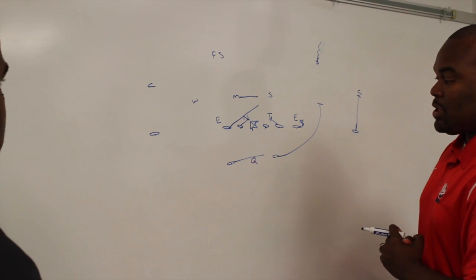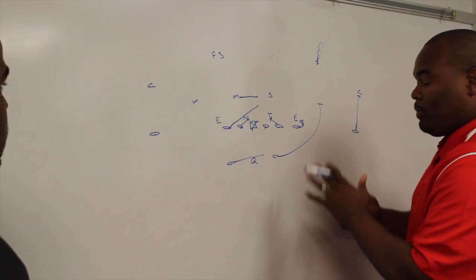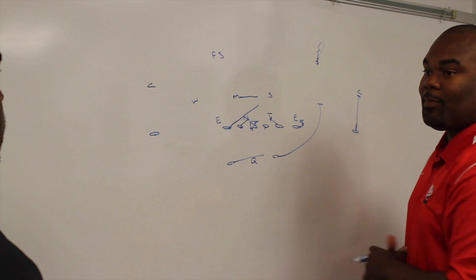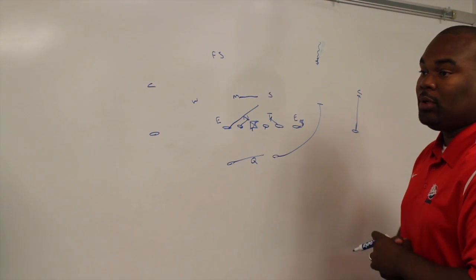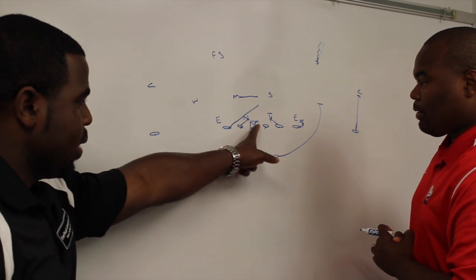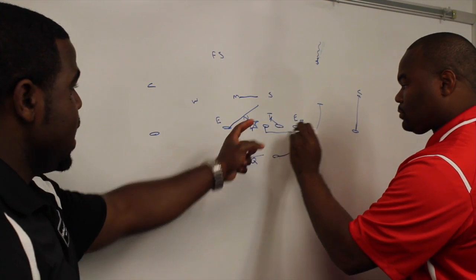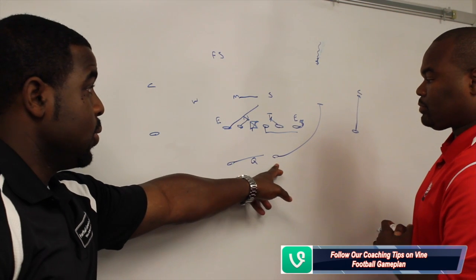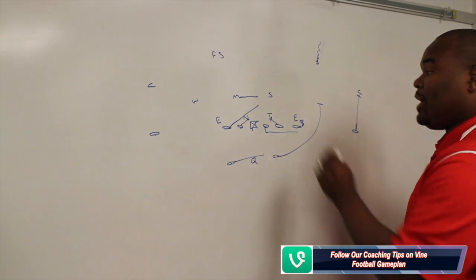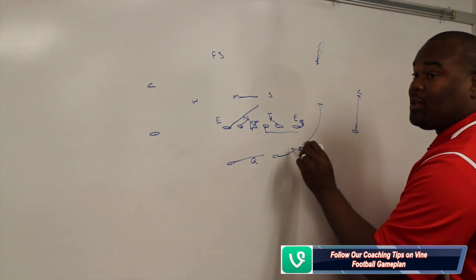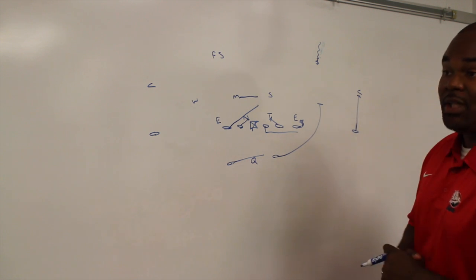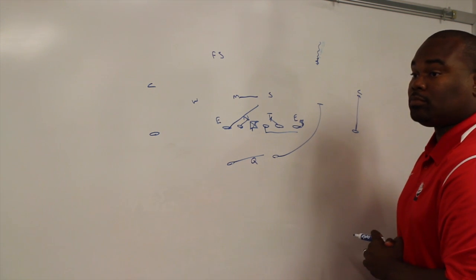The lead back is going to come around and block whoever's in the alley area. Sometimes this safety might still be on the drop and that Sam flies over the top. But if he shows up in the alley, that's the responsibility of the lead back. If the Sam comes first, it's his duty to pick him up first. If the Sam comes outside and he shows up in the alley and he's more dangerous than that safety, we expect the lead back to take care of him.